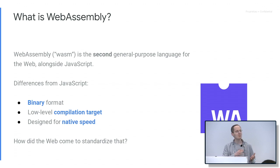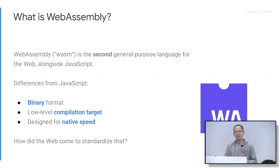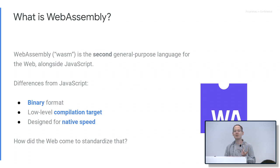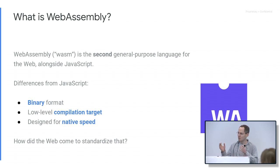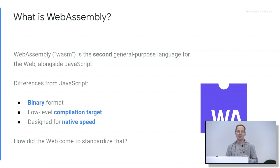WebAssembly was added much, much later after JavaScript. It's an interesting story. We added it because it does different things than JavaScript — in particular, the stuff noted on the slide here. It's a binary format, so it's much smaller and more compact. It's a compilation target, so you typically don't write it by hand; you compile to it.